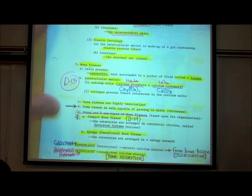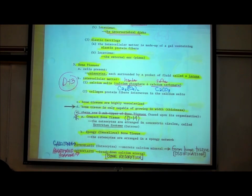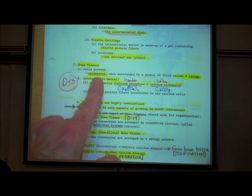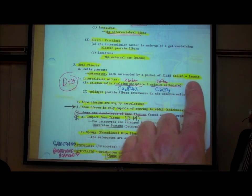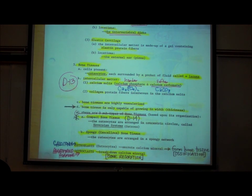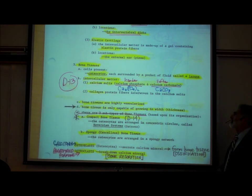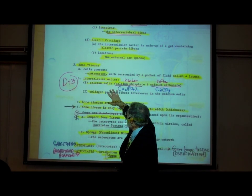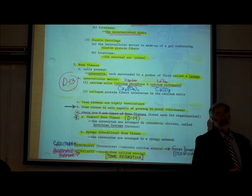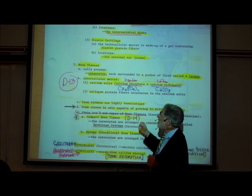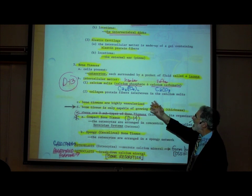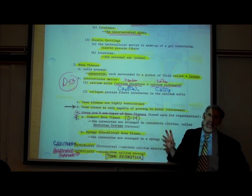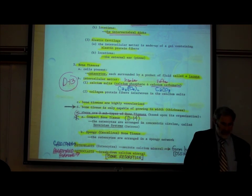Turning to page D13, bone tissue. The cells that make up bone tissue are called osteocytes, or bone cells. Just like cartilage cells, they are surrounded by a pool of fluid called a lacuna. These bone cells secrete both calcium salts and collagen. There are two calcium salts: calcium phosphate and calcium carbonate.